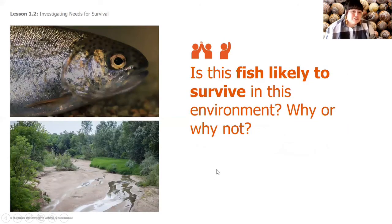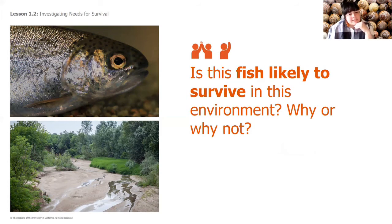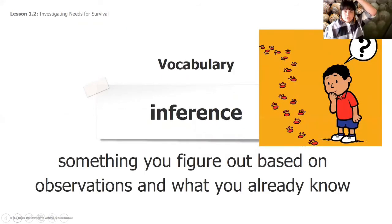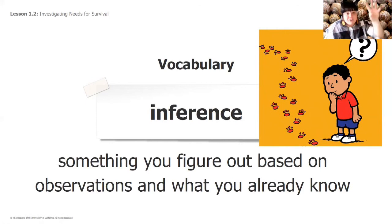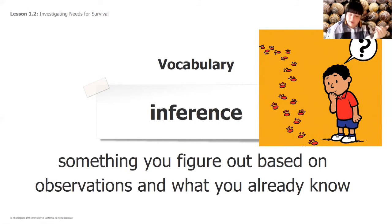Is this fish likely to survive in this environment? Probably not — but why? I see water, but is that enough water? It's not. So this fish most likely will not survive. An inference is something you figure out based on observations and what you already know. We know rain comes from filled clouds — the water cycle. We know fish live in water, so a fish is going to need plenty of water to survive.